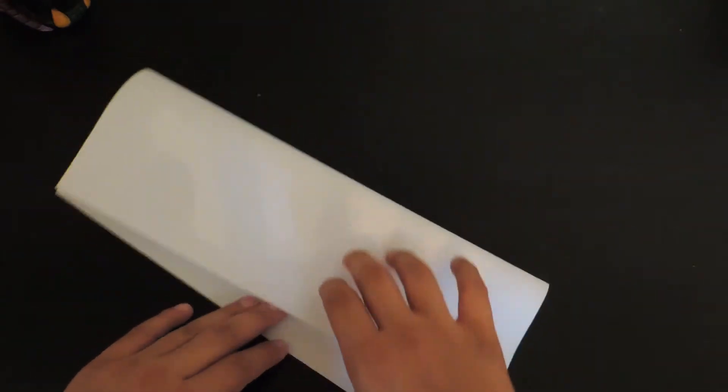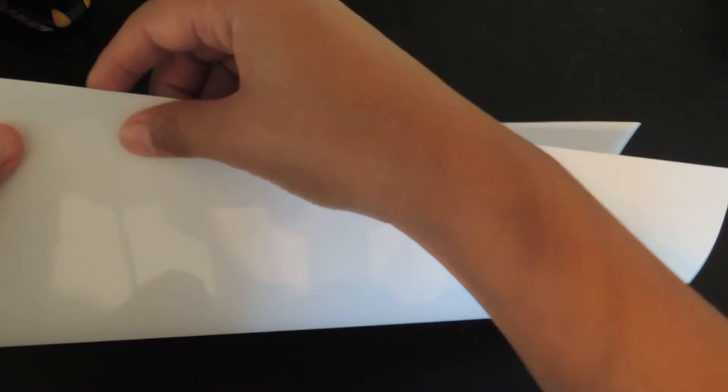So first we're going to use a paper. Okay, so I got mine. You're going to have to fold it in half like this. Make sure you get the corners perfectly.